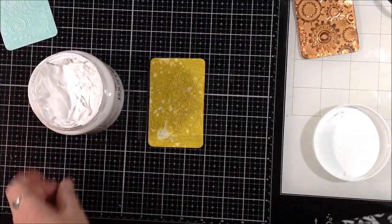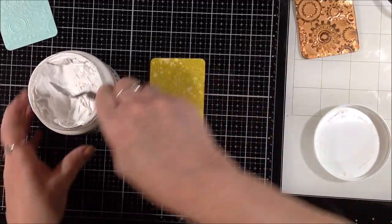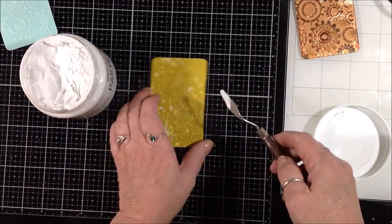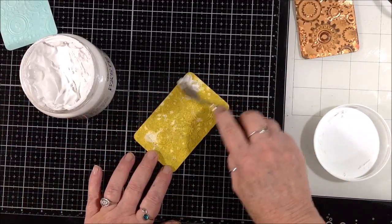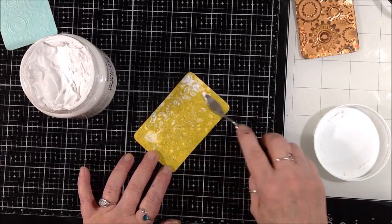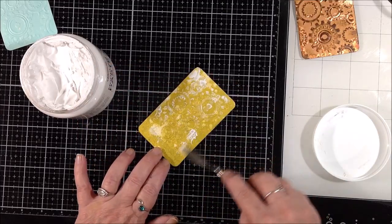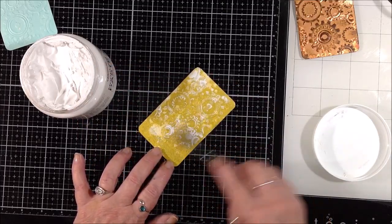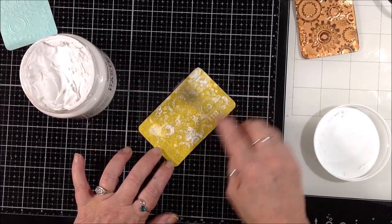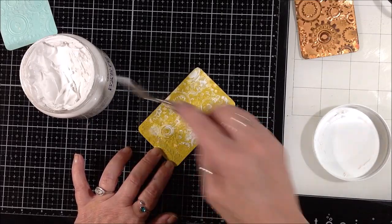Moving on, I'm working on the card that I had the distress oxide paint on and I'm just going to add a really thin, uneven layer of modeling paste. What that is doing is just bringing the texture of the embossing back up so that it can be seen better.